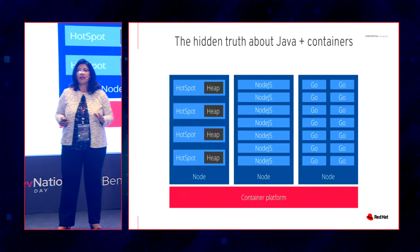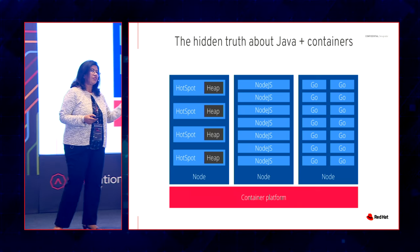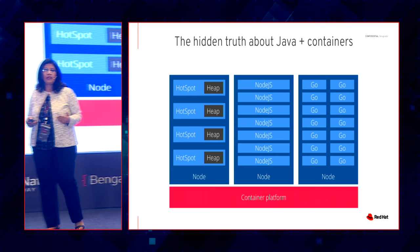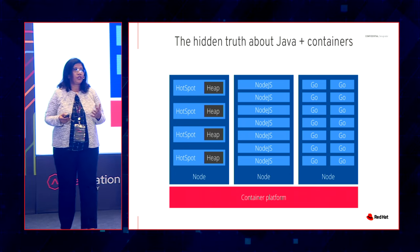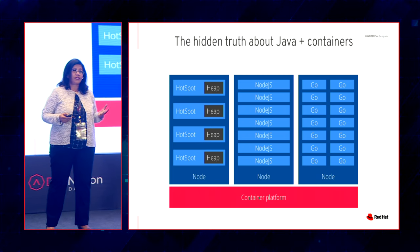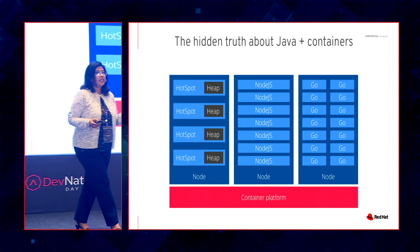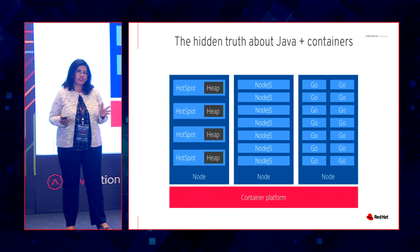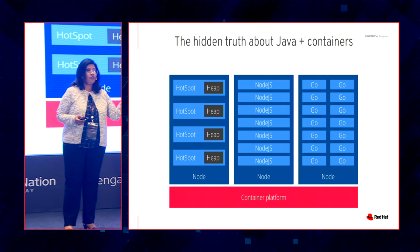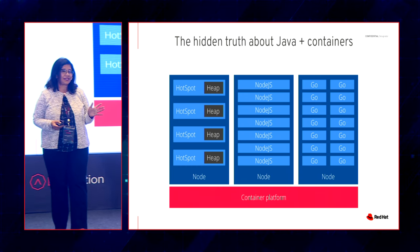Another proof point: when we look at the latest languages, pre-compiled languages like Golang or Node.js, you can clearly see that Java is consuming a lot of resources, especially on a containerized platform. As you move from left to right on this comparison, resource utilization is much less.